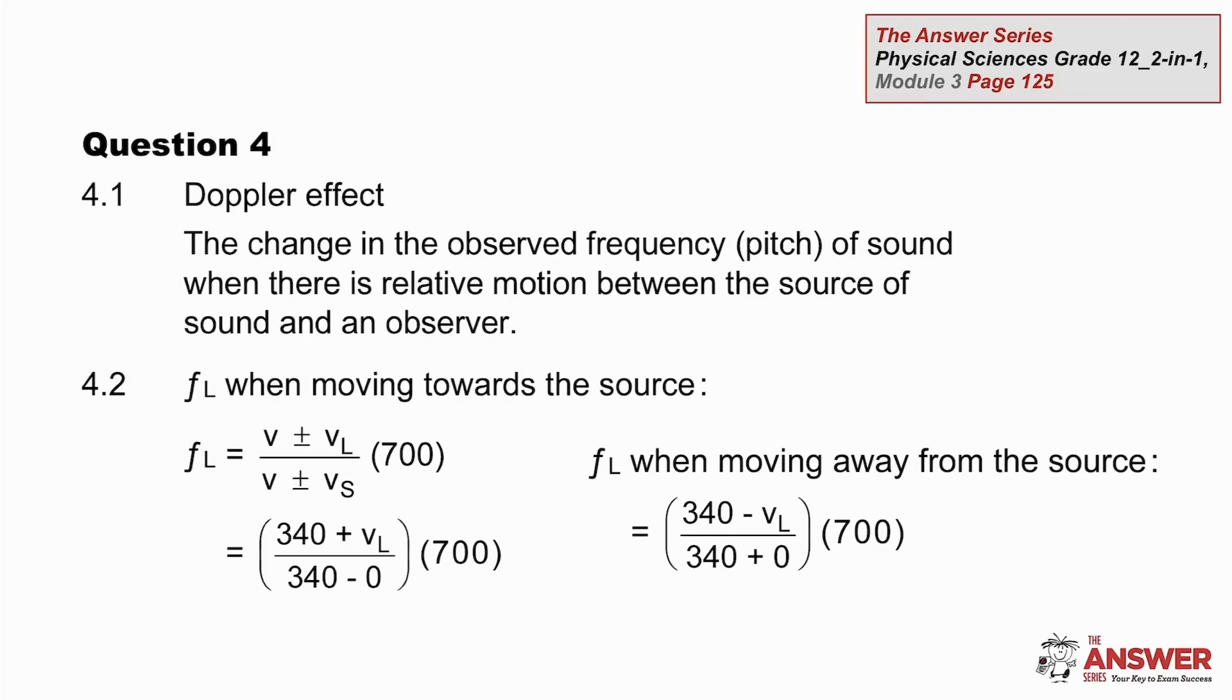In question 4, we have to name and state the effect to earn all three marks. So we provide the definition, as well as naming the Doppler effect. The mark allocation is a useful guide to how much is being asked for in a question.